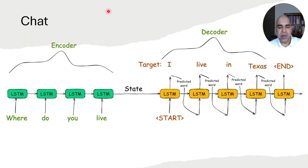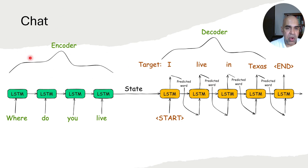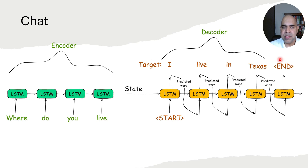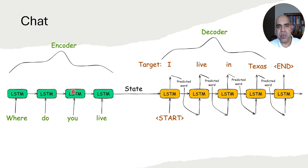The previous example was on machine translation. Here is an example of a chat application: if the encoder input is "where do you live?", we can train a decoder to learn that the answer can be something like "I live in Texas". Another similar example is text summarization — given a long text as input in the encoder, we can train a decoder to create a summarization of that text.